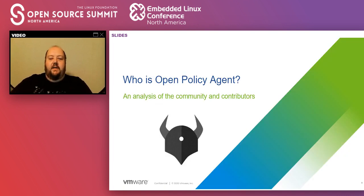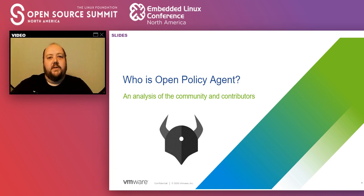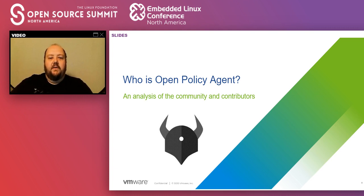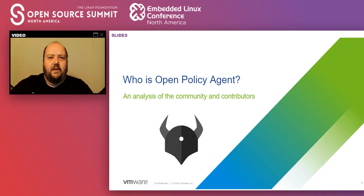Who is Open Policy Agent? The little Viking helmet with the horns is the logo for OPA. We need to acknowledge who is building any open source project, because you define an open source project's health by its community. There's a lot of time and effort our team spends looking at all these products and figuring out if they're going to be around in five years. If you're about to spend a huge amount of time and effort to bring a new technology into the way you do business and it disappears in 18 months, that's a lot of wasted effort. Looking at the community of any open source project you're about to bring in is a worthwhile endeavor.